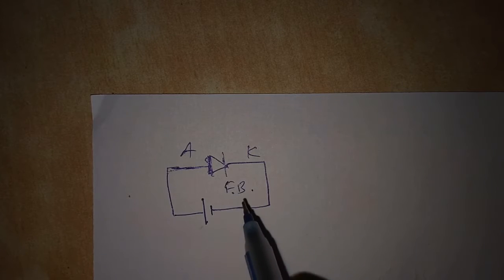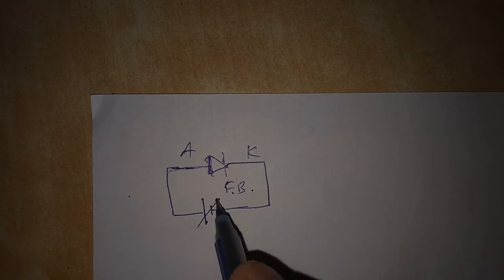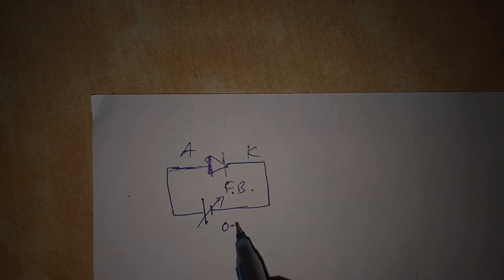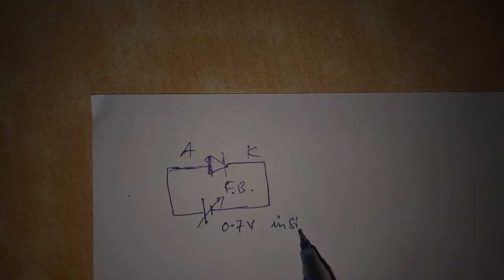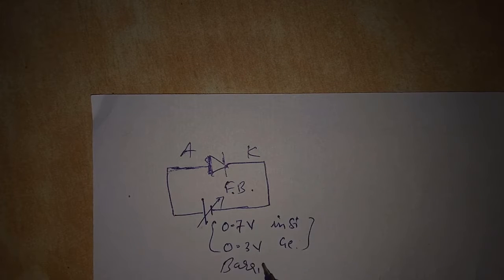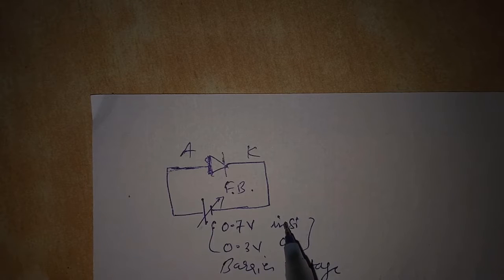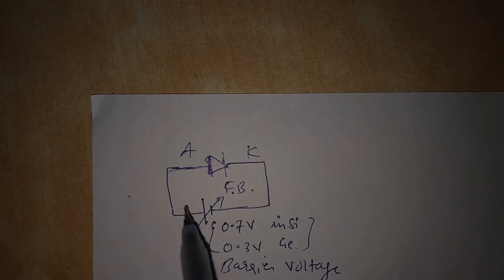In forward bias connection, the diode allows current to pass through it once the voltage rises above 0.7 volts in a silicon diode and 0.3 volts in a germanium diode. These are called barrier potentials or barrier voltage. If we increase the battery voltage above 0.7 volts, the current will start flowing in the circuit.